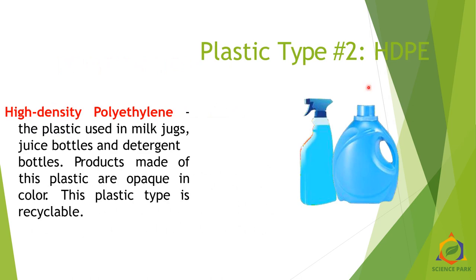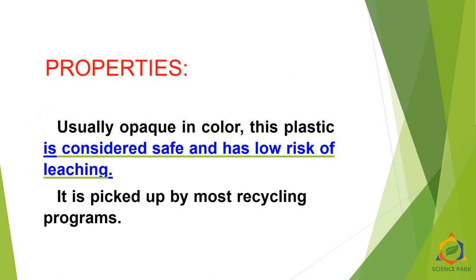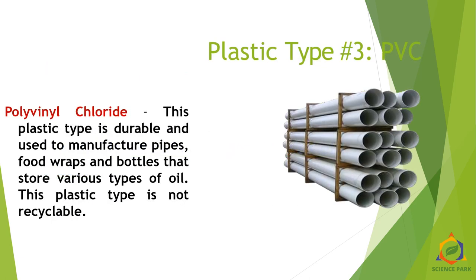Type 2 is HDPE — high density polyethylene. This is the plastic used for milk jugs, juice bottles, and nitrogen bottles. Products made of this plastic are opaque in color. This plastic type is recyclable and considered safe, with a low risk of leaching. It is picked up by most recycling programs.